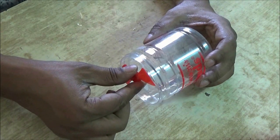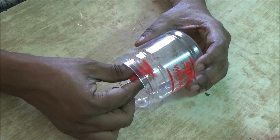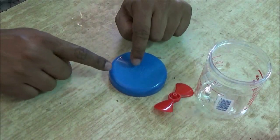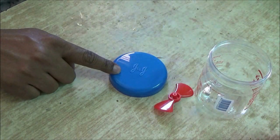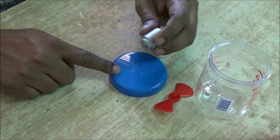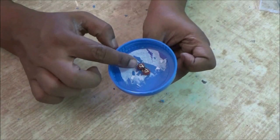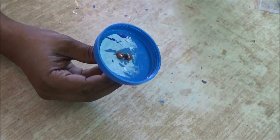The propeller size should be less than the container so that it can easily go inside. On the cap, we have to fit this 3 volt DC motor, so we'll make a hole and tighten the motor with a screw.